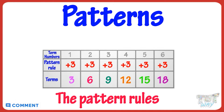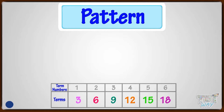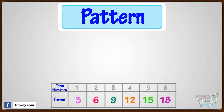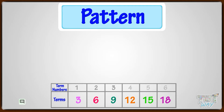Here is a pattern. Let's give term numbers to the pattern first. We have assigned the term numbers to the terms. We have six terms. Term number one is three, term number two is six, term number three is nine, and so on.